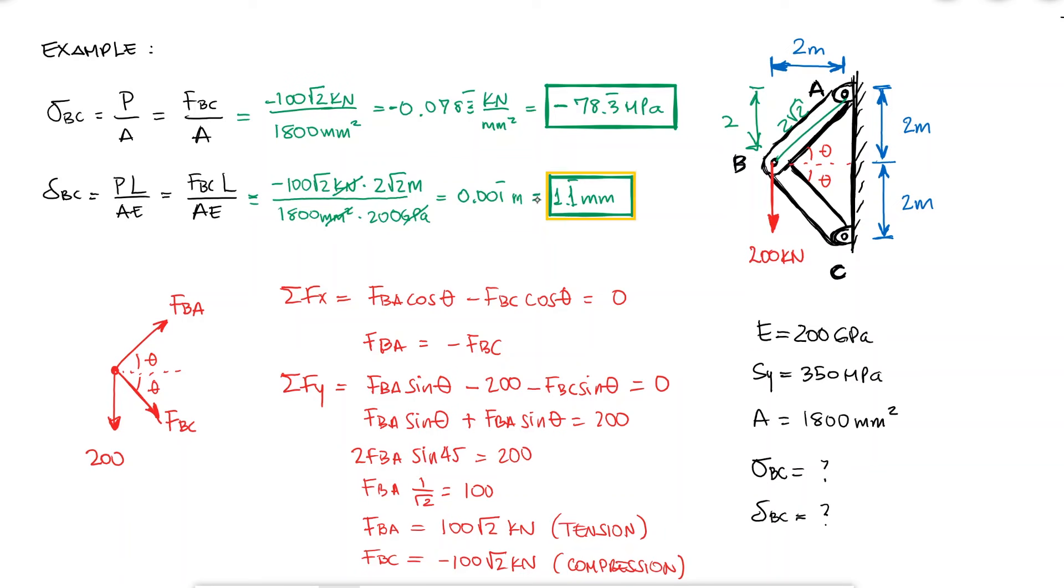Since the displacement is only 1.1 repeating millimeters and the dimensions of the members are 2 square root of 2 meters, I can assume that even though member BC is compressing and BA is stretching, the dimensions of the triangles remain mostly the same, and both angles theta are almost exactly 45 degrees.